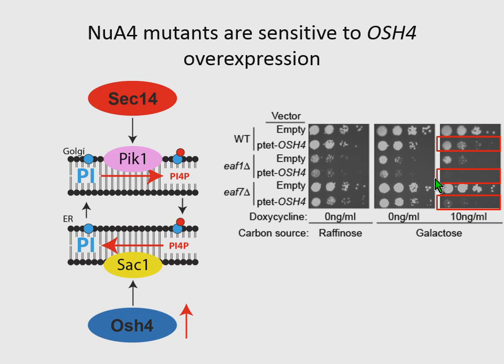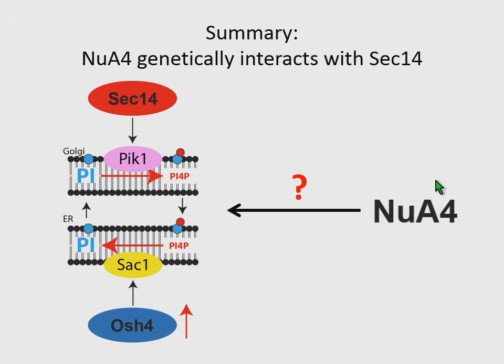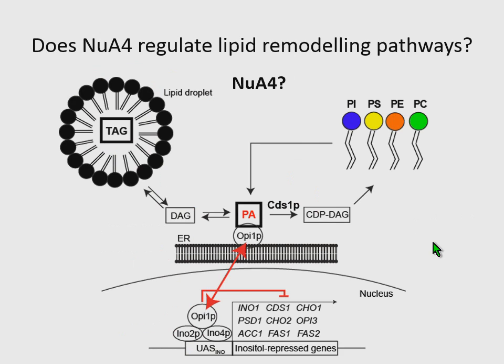This led my interest into figuring out exactly why NeoA4 is genetically interacting with SEC14 and its dependent pathways. I was able to show that NeoA4 isn't directly impacting PI4P levels. In fact, when we bypass SEC14's function by using its common suppressors such as OSH4 delete and CKI1 delete, NeoA4 mutants prevented the suppression of SEC14 essential function. This led us to look at transcriptional analysis of NeoA4 mutants, specifically looking for genes which were misregulated and would have an effect on lipid metabolic pathways.